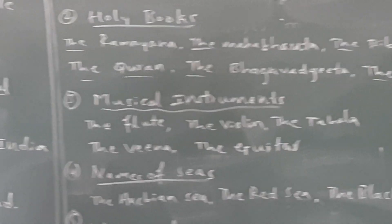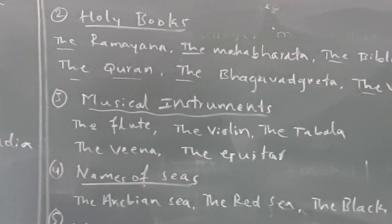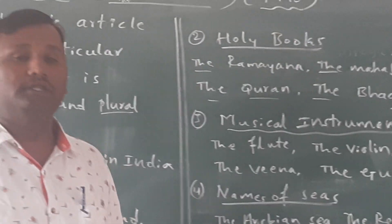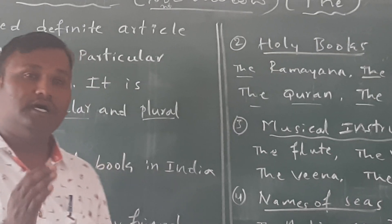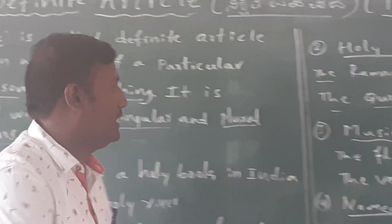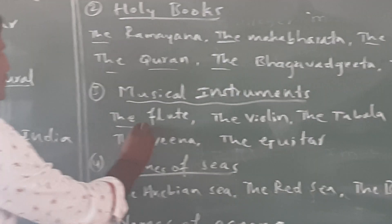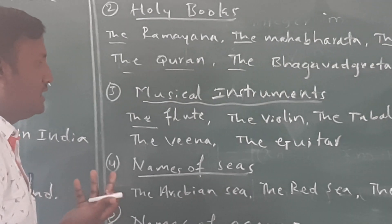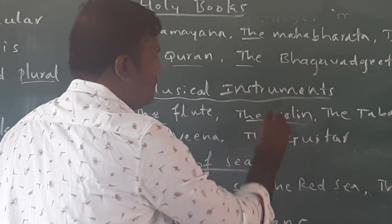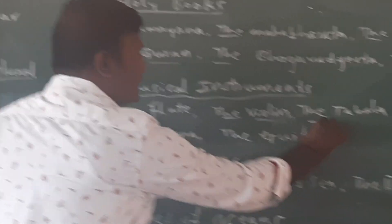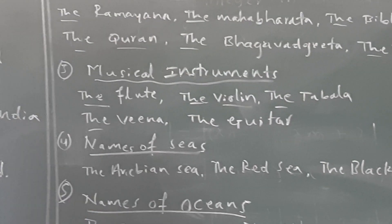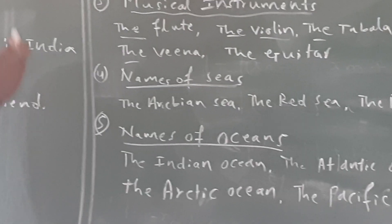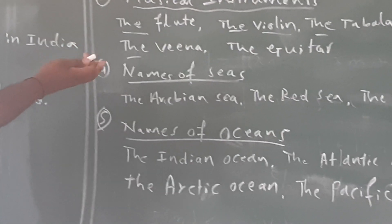Third rule: before the names of musical instruments. Before the names of musical instruments, we use the article 'the'. For example: the flute, the violin, the tabla, the veena, the guitar, the harmonium. These are musical instruments, so we must use the article 'the'.